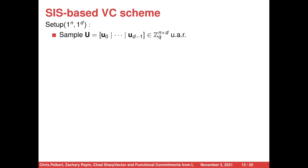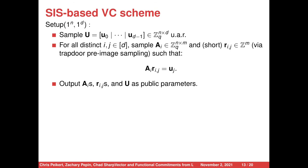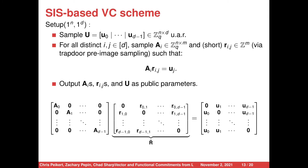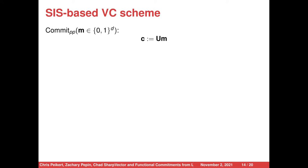Our SIS-based vector commitment scheme is as follows. To generate the public parameters for vectors of arity d and security parameter n, we generate a uniformly random matrix U with columns U_0 through U_{d-1}. We use a technique called trapdoor pre-image sampling to generate d matrices A_i with trapdoors, and then for all distinct i, j, we generate short Gaussian vectors R_{ij} such that A_i times R_{ij} equals U_j. Our public parameters are all of these A_i's, R_{ij}'s, and U. To commit to a d-bit message vector M, we simply multiply the message vector M by U to produce commitment C.